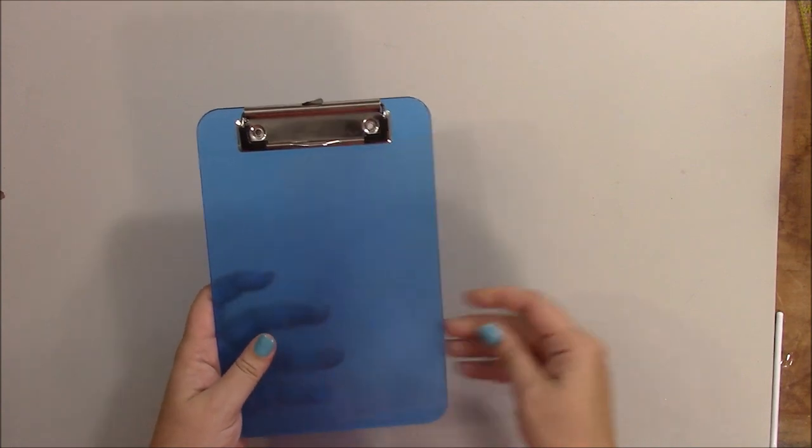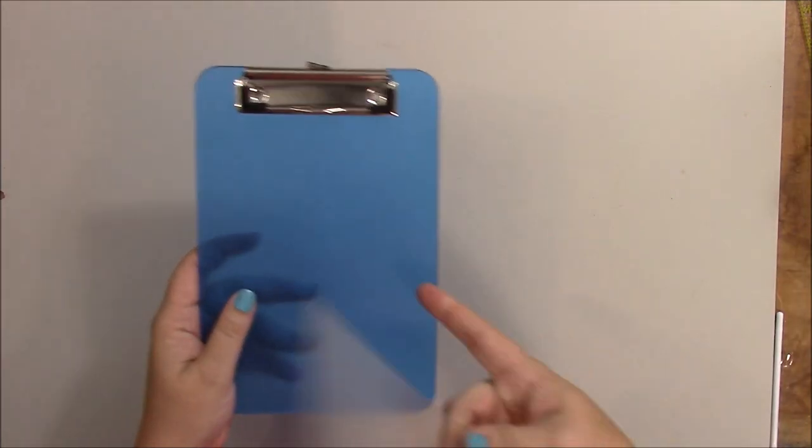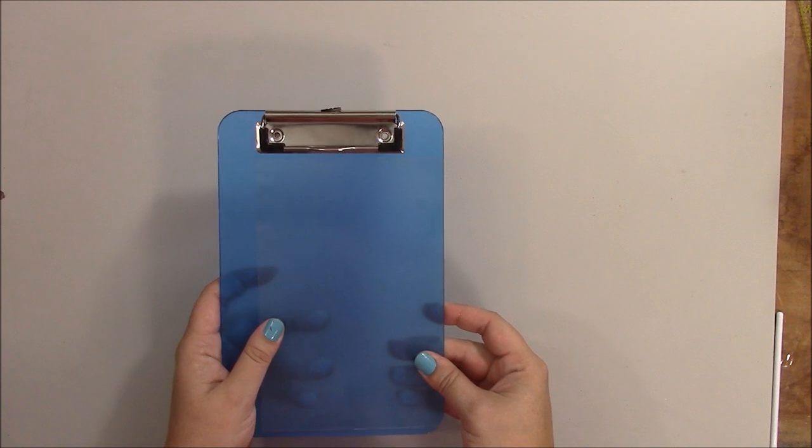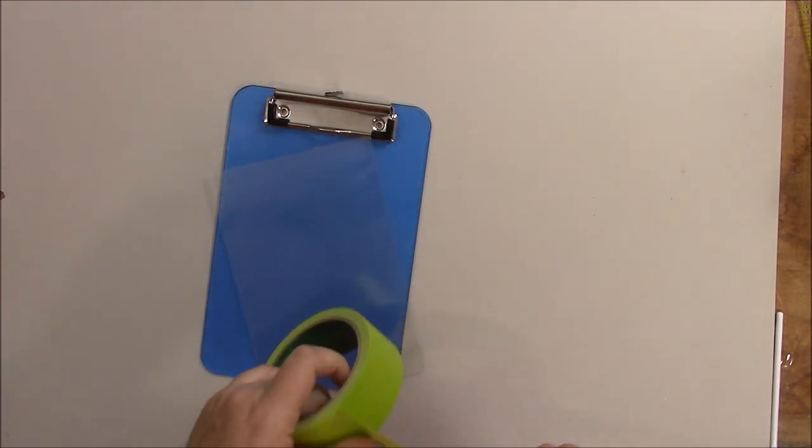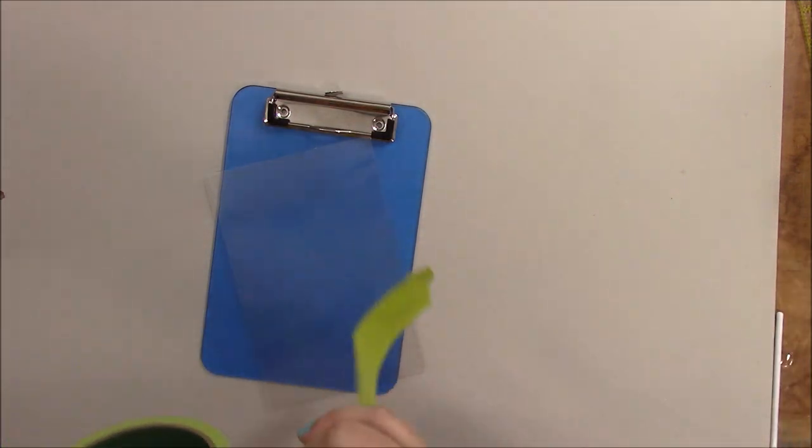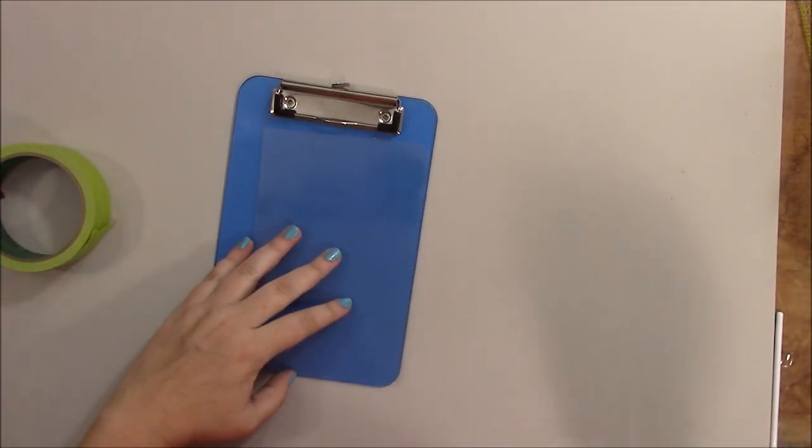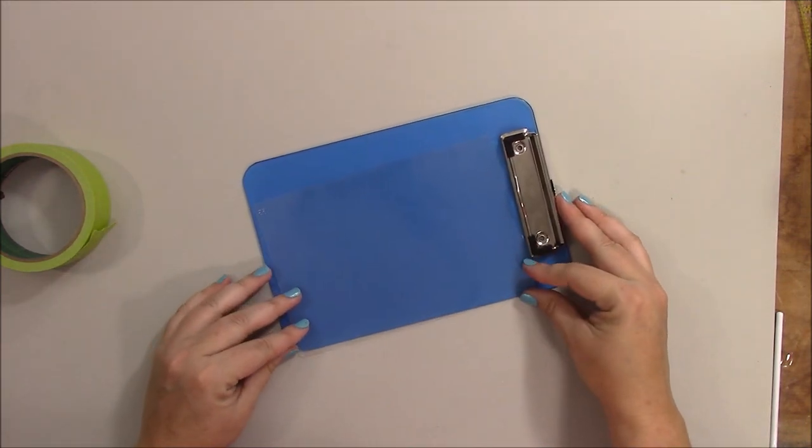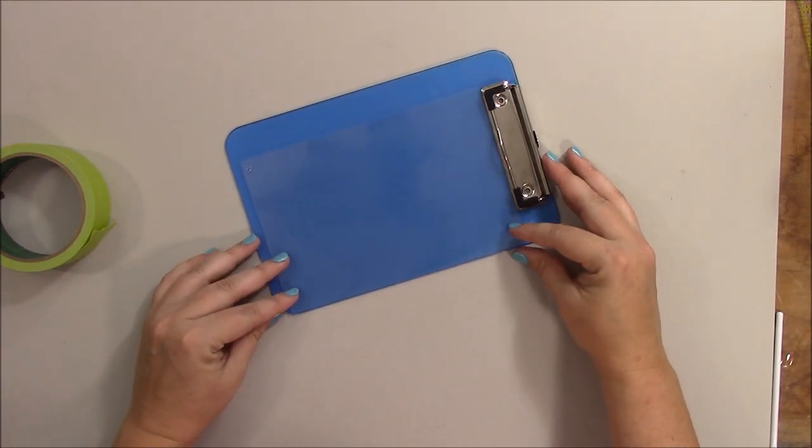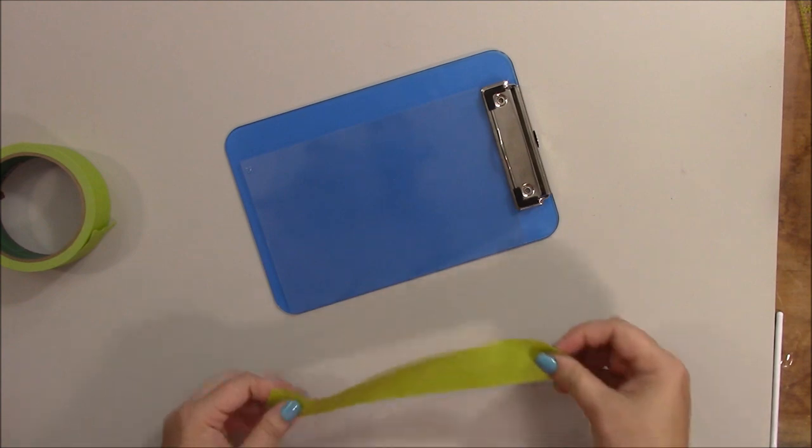So what we're basically going to do is attach the clear plastic to the clipboard with some tape. Any tape will do. You can use duct tape or masking tape, maybe not washi tape, that might be a little bit too thin, but anything else should do. So just line up your sides and put the tape on.